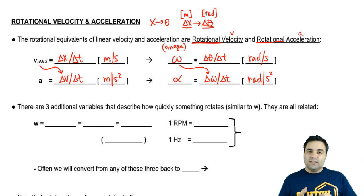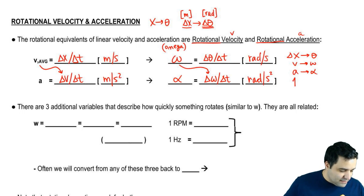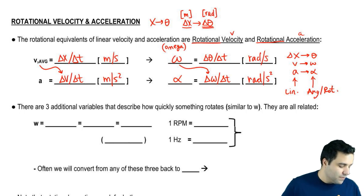So you might start to see a pattern. The variables are x or delta x, and then v and a, and they become theta, omega, and alpha. The pattern is that English letters are representing linear motion, and Greek letters are representing angular or rotational motion. These are all Greek letters: theta, omega, and alpha.